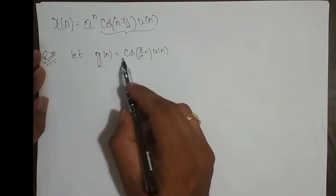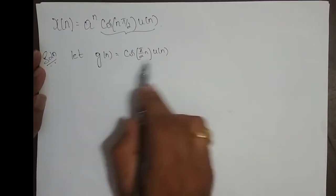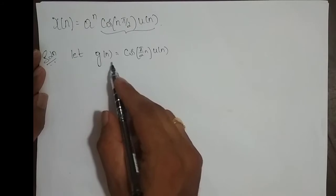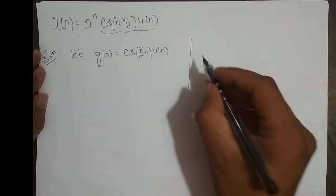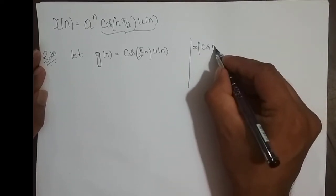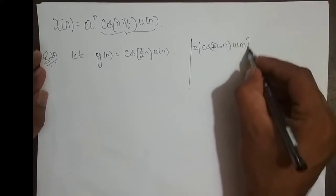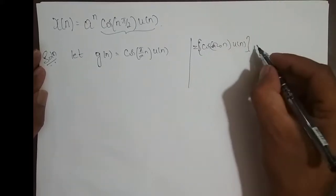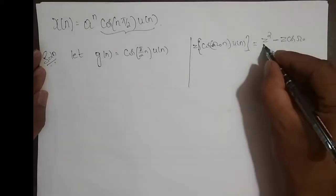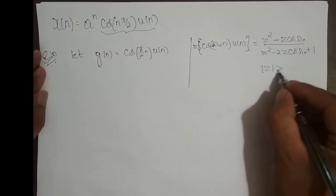Once you assign a part of the sequence x(n) to g(n), you should know its Z-transform. Make sure that you know its Z-transform. If you don't know, you have to solve its Z-transform first and then apply it in later steps. From the list of Z-transforms, the Z-transform of cos(ω₀n) u(n) is: (z² − z·cos ω₀) / (z² − 2z·cos ω₀ + 1), with ROC: |z| > 1.